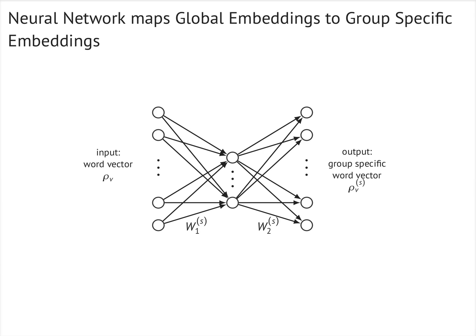For example, to get the embedding of the word 'intelligence' specific to computer science abstracts, we take the global embedding vector of 'intelligence' and pass it through the neural network for computer science. If we use the neural network for statistics, we get the embedding of 'intelligence' specific to statistics.